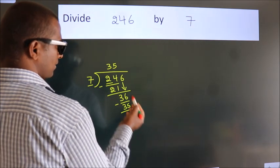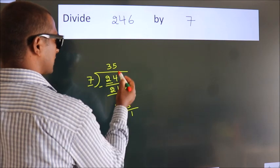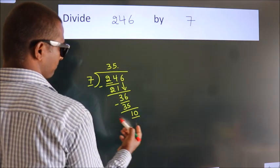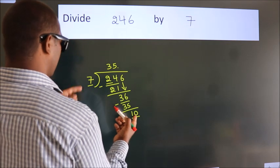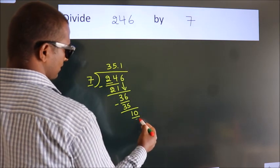After this, no more numbers to bring it down. So 10. A number close to 10 in the 7 table is 7 ones, 7.